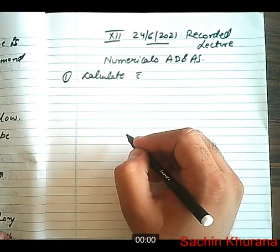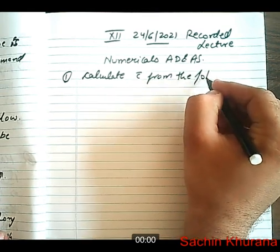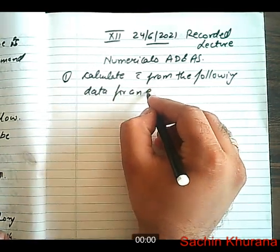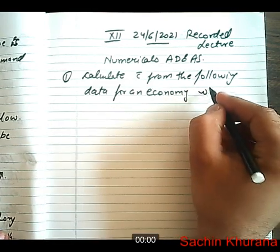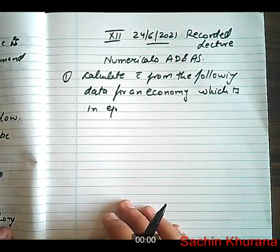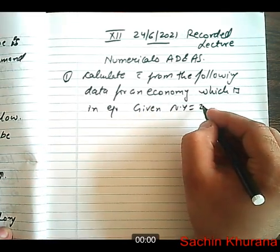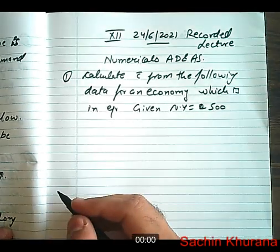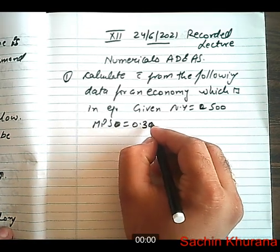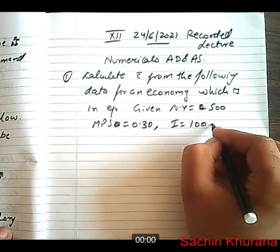Calculate autonomous consumption expenditure, that is C bar, for the following data for an economy which is in equilibrium. Given: national income is equal to 500, MPS is equal to 0.30, and investment expenditure is equal to 100.